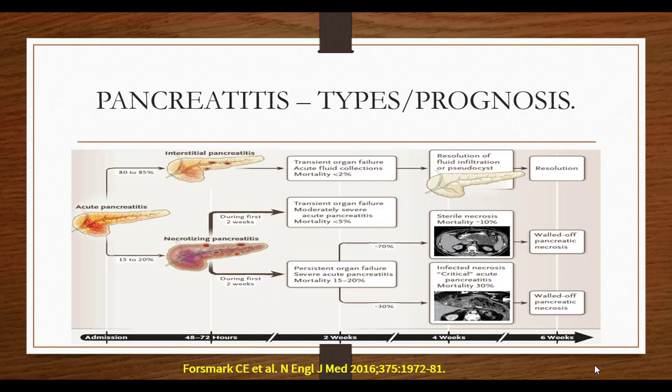To summarize: the majority of pancreatitis — around 80 to 85% — is interstitial pancreatitis, where there is only edema of the pancreas, with transient or no organ failure and mortality less than 2%. Some patients develop necrosis: in the first two weeks this can lead to transient organ failure — moderately severe pancreatitis, mortality less than 5%. Some go to persistent organ failure — mortality 15 to 20%. With sterile necrosis, mortality is around 10%; if necrosis plus persistent organ failure plus infection develops, mortality becomes more than 30%, up to 60%.